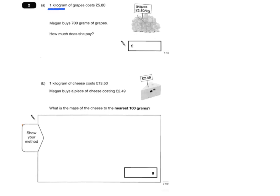This is one of those common questions where you need to find out the base amount. So it says one kilogram of grapes costs £5.80.